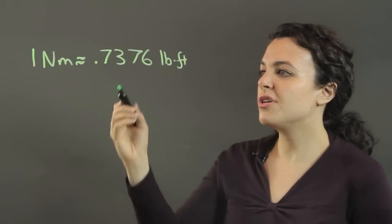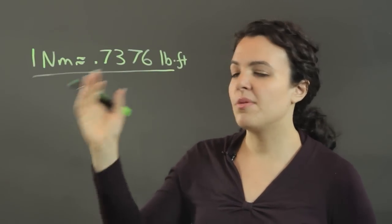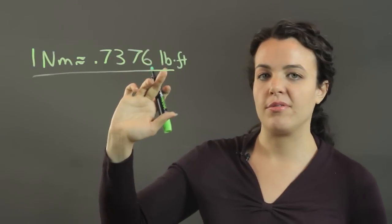So this is what you need for your conversions. If you have any number of Newton meters, for every Newton meter, you're going to have 0.7376 pound feet.